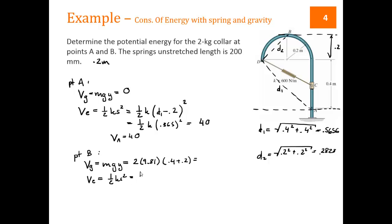If we plug things in, we have 1/2 K is 600. 0.2828 minus 0.2 gives us 0.0828 squared. Then the total VB is VG plus VE. Plug everything in, you get 13.83.